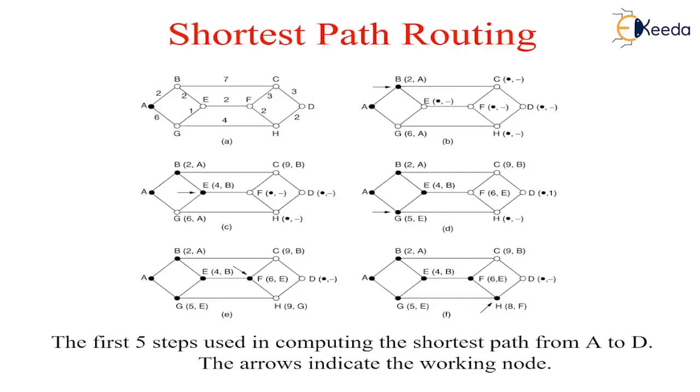To illustrate how the labeling algorithm works, look at the weighted undirected graph shown in figure A, where the weights represent, for example, distance. We want to find the shortest path from A to station D. We start out by marking node A as permanent, indicated by a filled-in circle. Then we examine, in turn, each of the nodes adjacent to A. Here A is now the working node. And then relabel each one with the distance to A. Whenever a node is relabeled, we also label it with the node from which the probe was made, so that we can reconstruct the final path later. Having examined each of the nodes adjacent to A, we examine all the tentatively labeled nodes in the whole graph and make the one with the smallest label permanent, as shown in figure B. This one becomes the new working node.